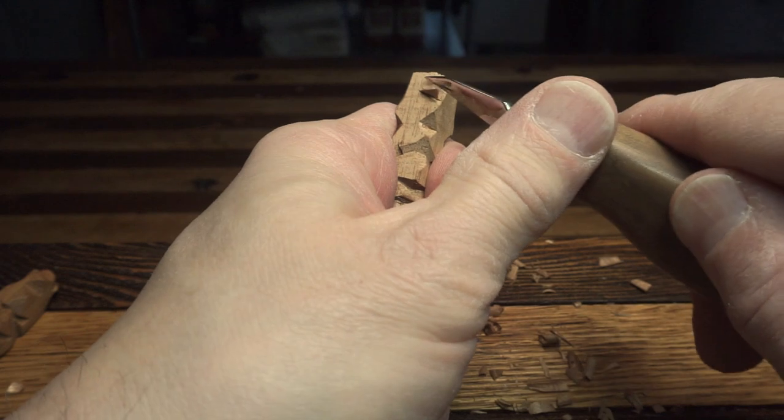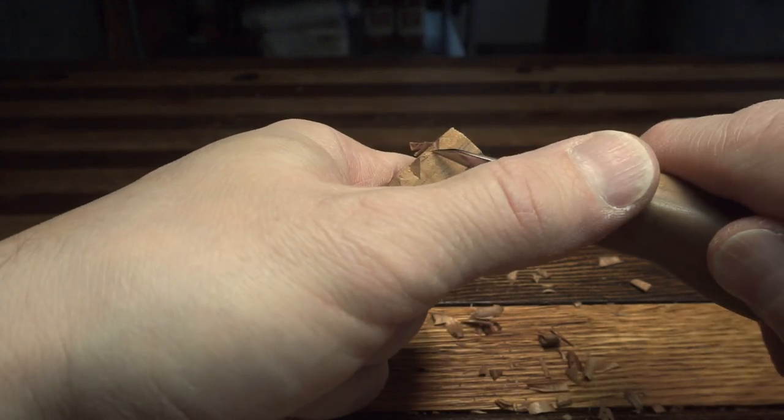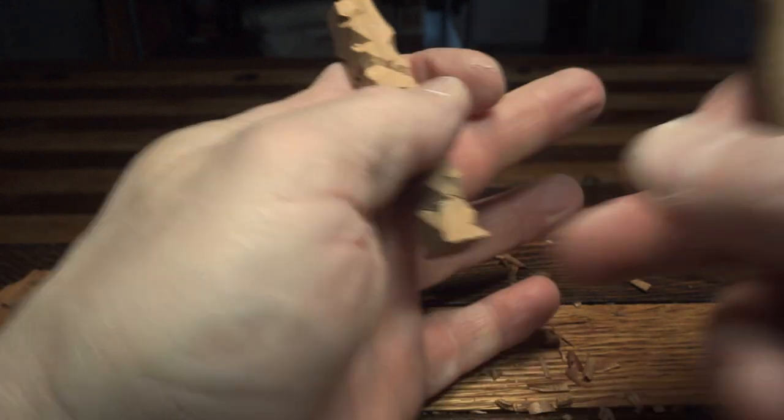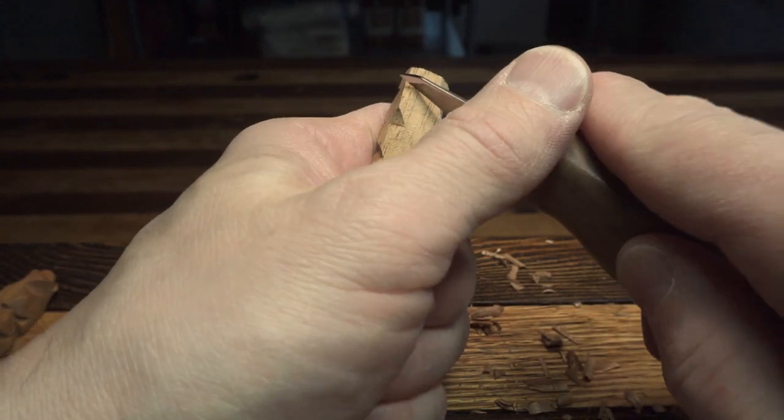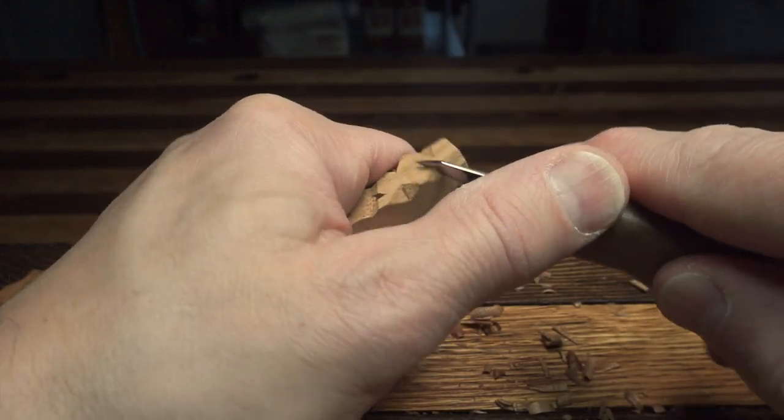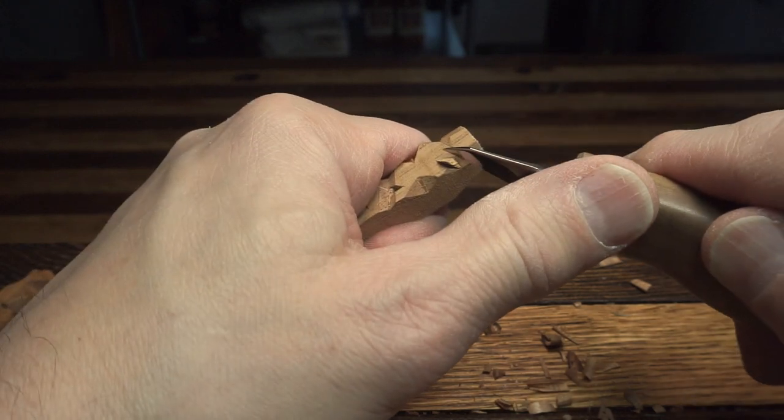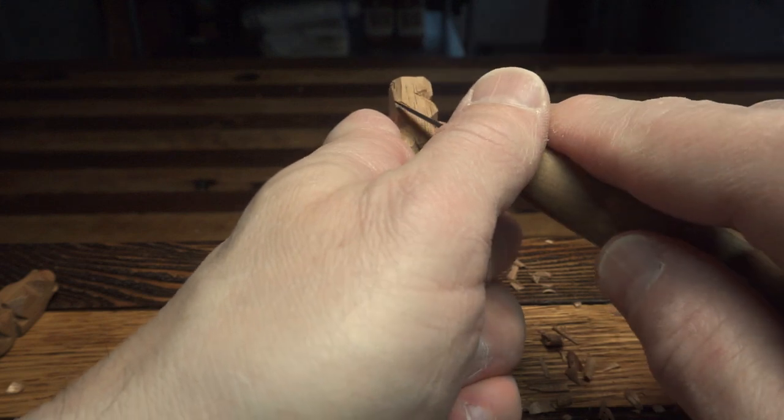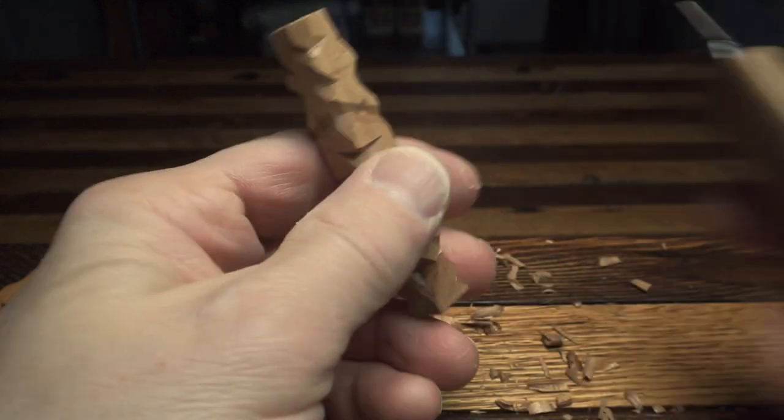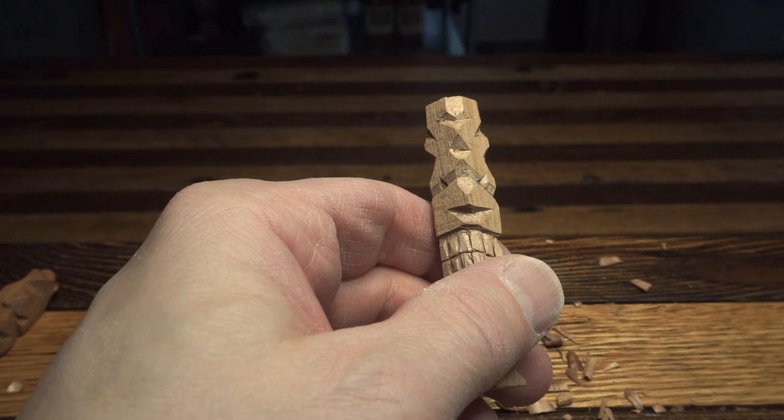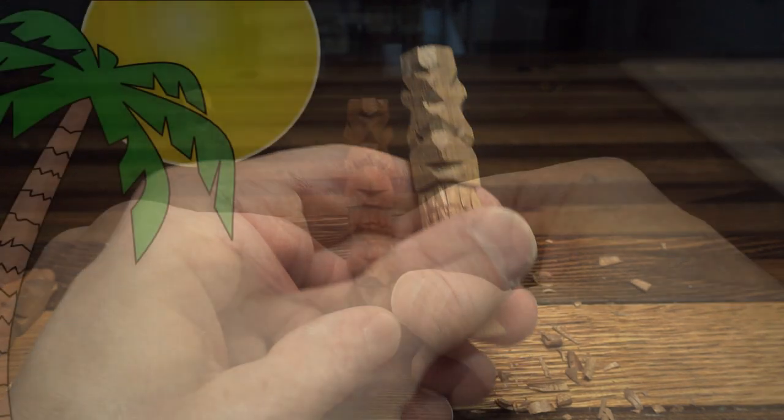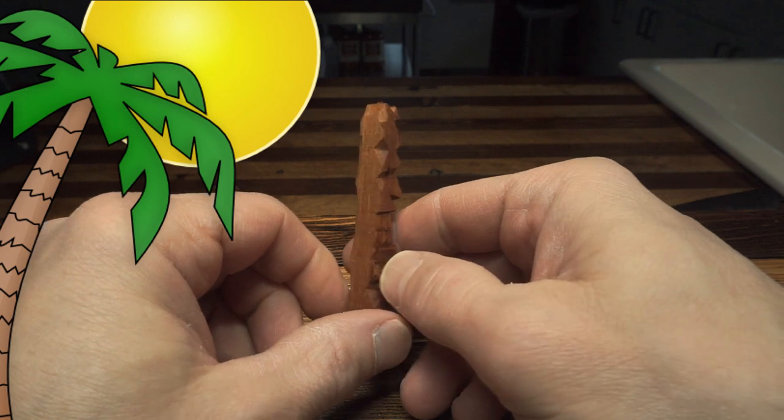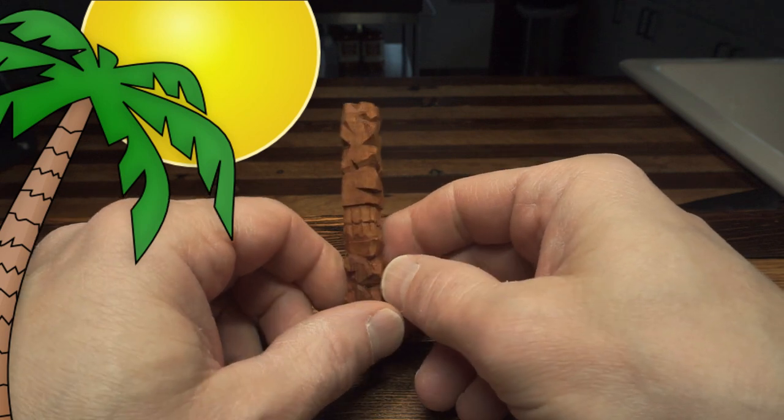And we'll just add a little bit of abstracted design features around the top here. We're getting pretty close to calling this one good. Again I'm not following a pattern, I'm just winging this as I go. You don't have to, you can add as many or as few as you'd like. That's about it. Okay there you go. Quick little tiki carving can be done in just about ten minutes.